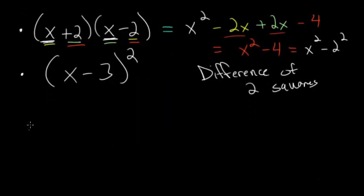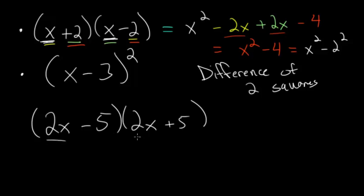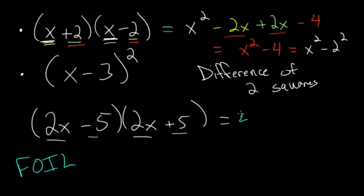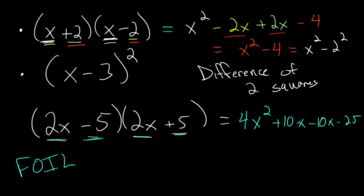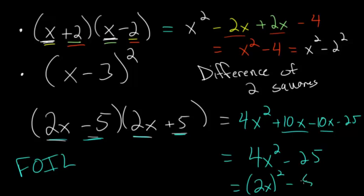Another example: (2x minus 5)(2x plus 5). You have the same starting term and you're subtracting 5 in one and adding 5 in the other, so the middle terms should cancel. Using FOIL: 2x times 2x gives 4x squared; 2x times positive 5 gives plus 10x; minus 5 times 2x gives minus 10x; minus 5 times positive 5 gives minus 25. The middle terms cancel, leaving 4x squared minus 25, or (2x) squared minus 5 squared.